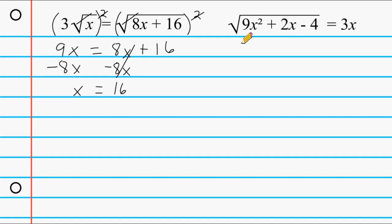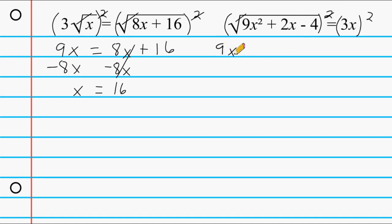Now over here we have all of this underneath the radical and we have to get rid of this radical by squaring this entire quantity. We have to balance our equation by squaring everything on the right. Our radical and our exponent cancel out leaving us with 9x squared plus 2x minus 4 on the left. Notice that 3x is not underneath the radical symbol, so we have to take this term and square it. So 3 squared is 9 and x to the second power is x squared.